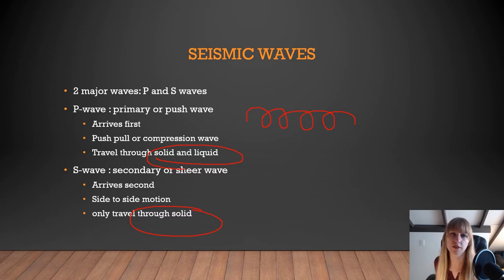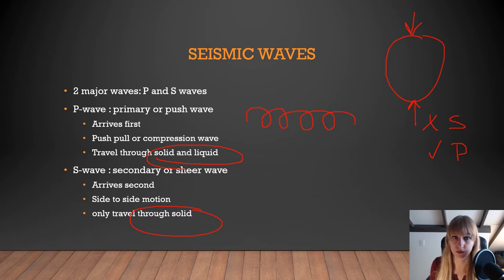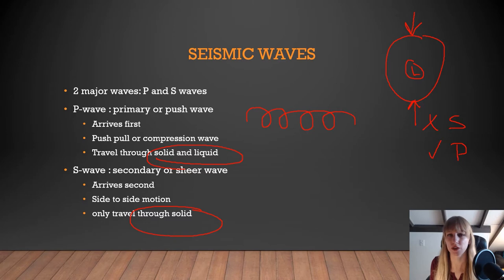Because of this, if an earthquake occurs at the North Pole, on the opposite side of the Earth you would get a P wave but no S wave. The reason is that the interior of the Earth is liquid, and S waves cannot pass through liquid.